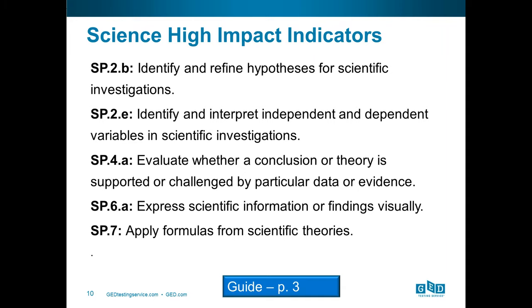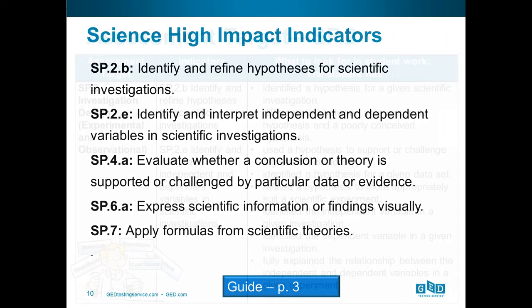These are the science high-impact indicators — and I didn't make a typo going from 2B to 2E; there are things in the middle. When we look at these indicators, it's clear that important classroom teaching areas include: identifying and refining hypotheses for scientific design investigations; understanding independent and dependent variables; and whether a conclusion is supported or challenged by data or evidence. Evidence appears across RLA, social studies, and science high-impact indicators. Students also need to express scientific information visually — charts, tables, graphs — and apply formulas from different scientific theories.